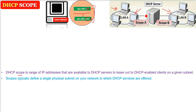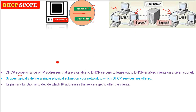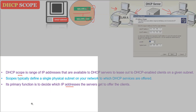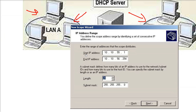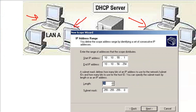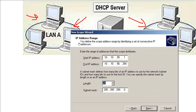So why are we learning scope if IP addresses are always there? This scope allows a DHCP server to create different subnets. From 1 to 50 it can give to one subnet, and 51 to 100 it can give to another subnet. So scope is typically defining a single physical subnet — as you can see in this diagram with two subnets — on your network to which DHCP services are being offered. The primary function is to decide which IP addresses the server gets to offer the client.